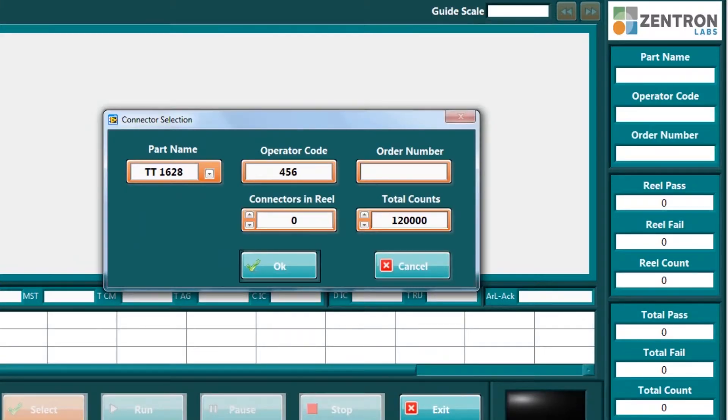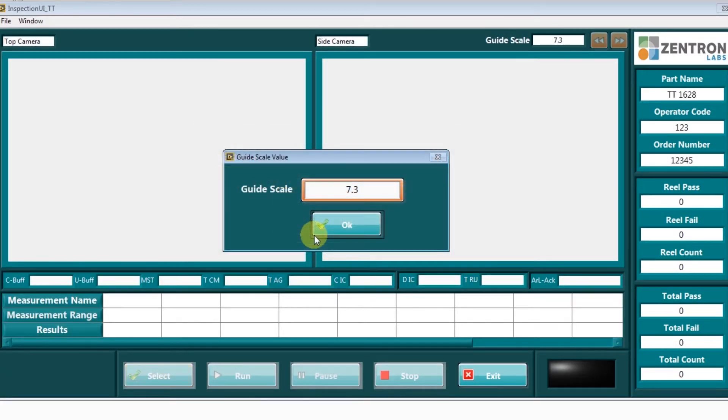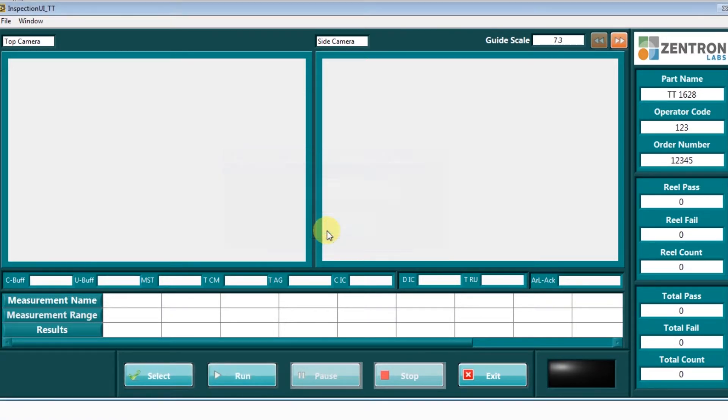The user-friendly GUI also shows the total number of terminals that are passed and failed in a reel. At the end of each reel, the CP and CPK values are generated. This can be printed and shipped along with each reel as the stamp of the robustness of your process.